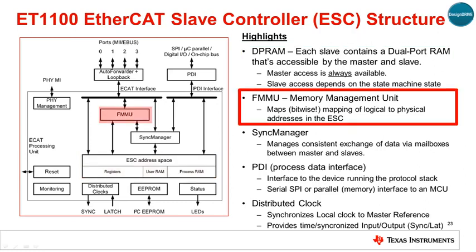The FMMU, or Fieldbus Memory Management Unit, is responsible for converting logical addresses for slave data into physical addresses via an internal table. Addressability is down to the bit level. It's this flexibility that enables a single EtherCAT command to address multiple slaves and achieve very high utilization of available system bandwidth.